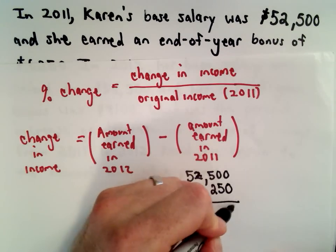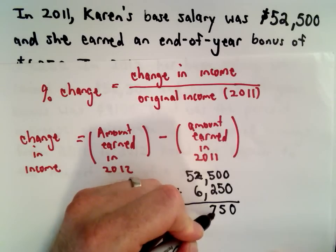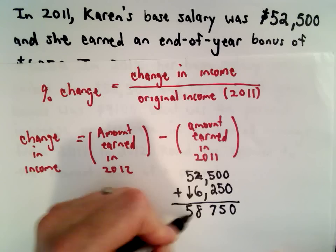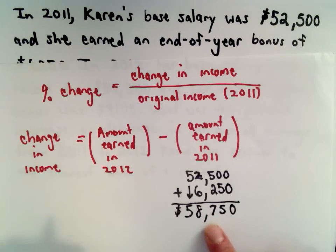So if we add 0 and 0 is 0, 0 plus 5 is 5, 5 plus 2 is 7, 2 plus 6 is 8, we'll just drop the 5 down. So in 2011, she made $58,750.